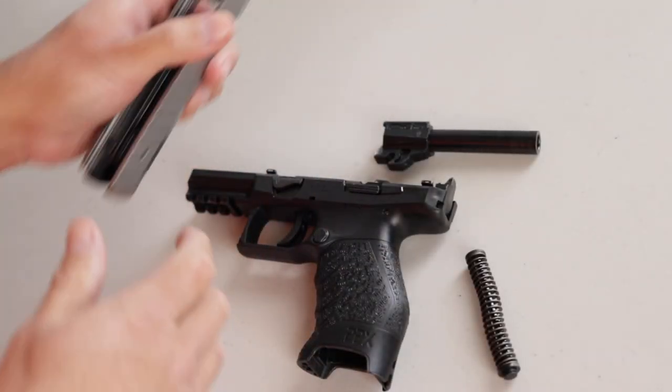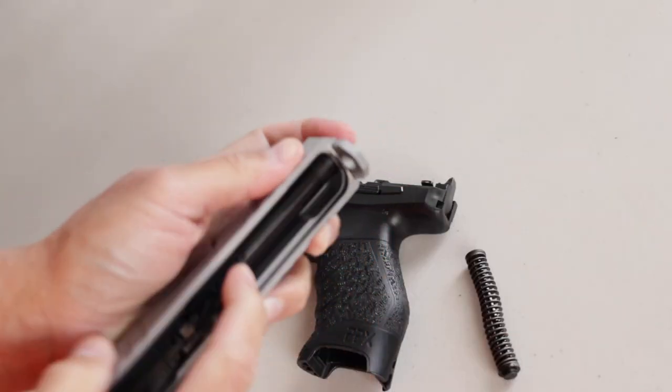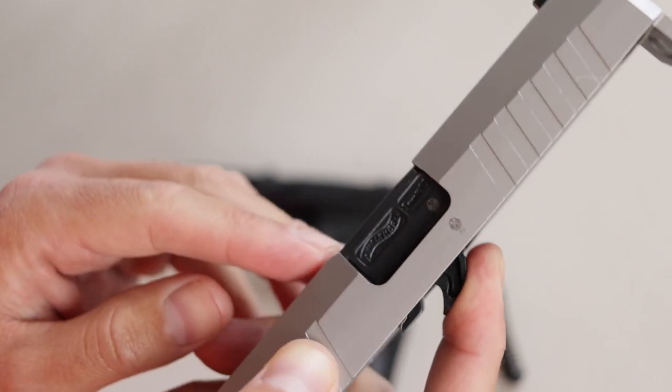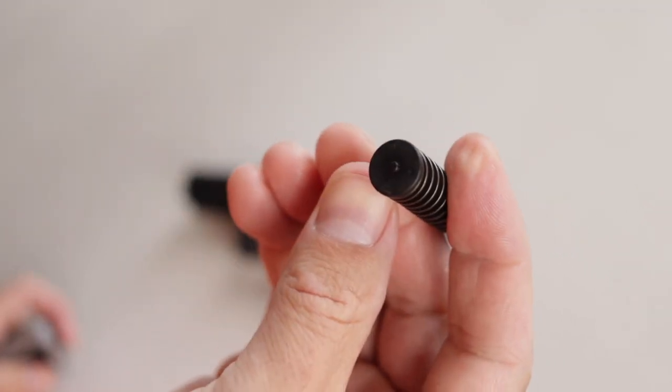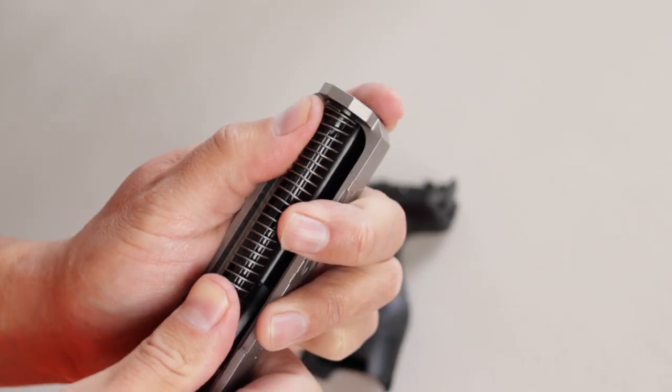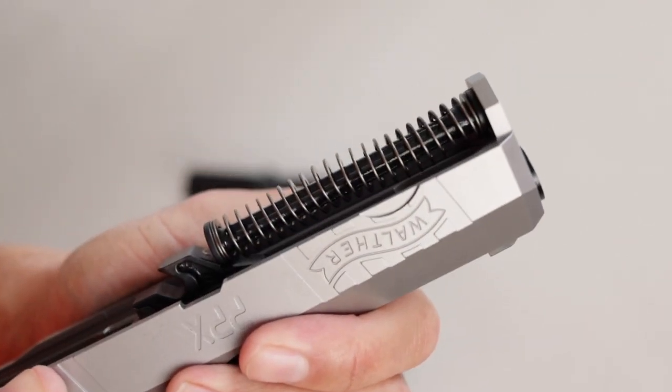Now that all the parts are clean, it's time to reassemble. Take the barrel and put it back in the slide. Make sure you have the correct lockup. Meaning it should look just like that. Now grab the recoil spring. The small end goes to the muzzle end. Of course that flat part goes to the chamber end. Push it in muzzle in first. Then release tension on the spring. And it should look just like that.